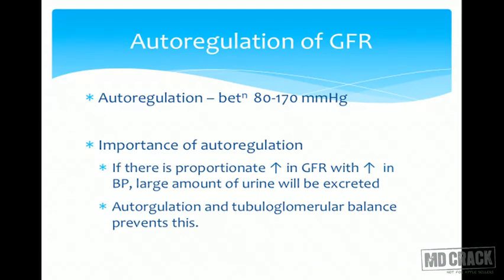Auto-regulation of GFR: the kidneys auto-regulate blood flow and GFR because excretion of metabolic waste products depends on filtrate being formed. GFR can be auto-regulated between blood pressures of 80 to 170 mmHg. Increased blood pressure would greatly increase GFR, causing filtrate to flow rapidly through the nephron without sufficient time for absorption, forming large amounts of urine. To prevent these fluctuations, auto-regulation is essential.